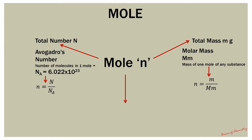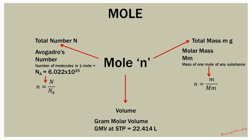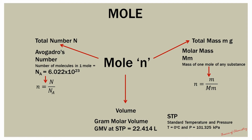The third method for determining the value of mole is from volume. Grammolar volume is the volume occupied by any gas at STP. STP stands for Standard Temperature and Pressure. The value of molar volume is 22.414 liters at STP. The value of temperature is 0 degrees Celsius and pressure is 101.325 kilopascals.